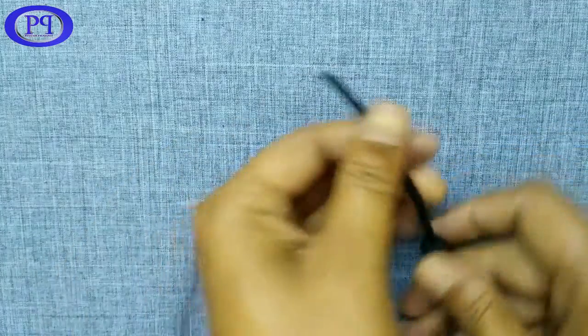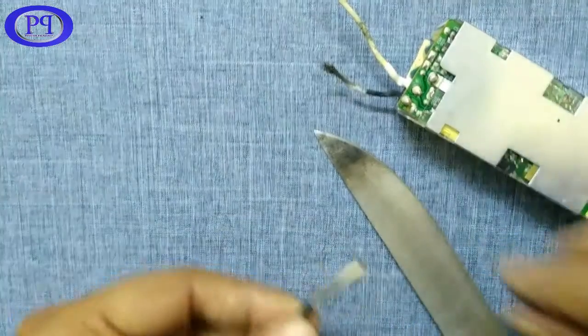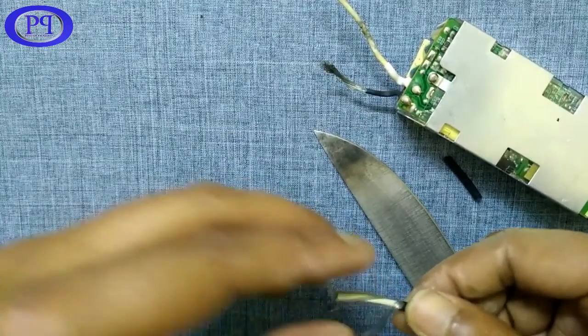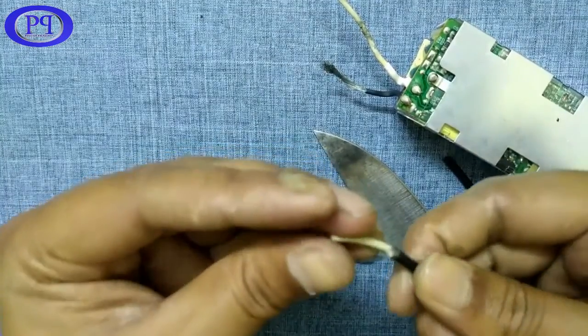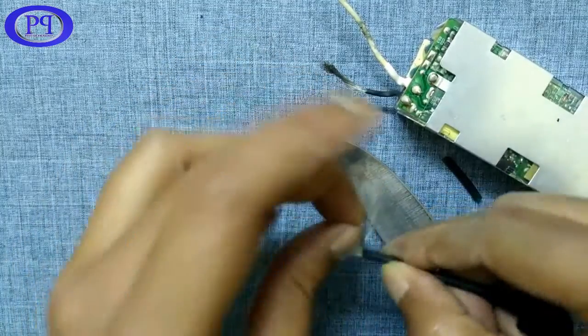For this time, I am keeping this back. I am stripping the outer cover at the end of this wire. As you can see, the naked wire is for the negative and that white wire is for the positive terminal.